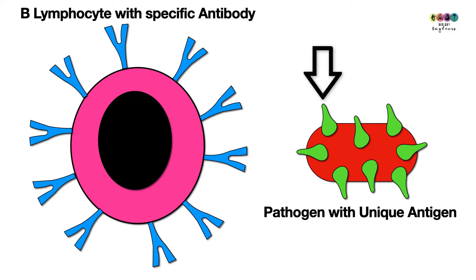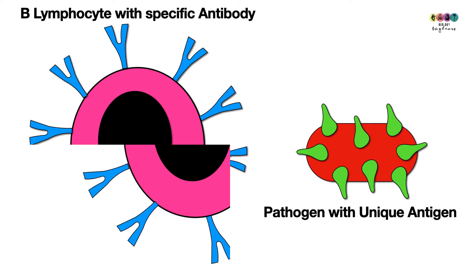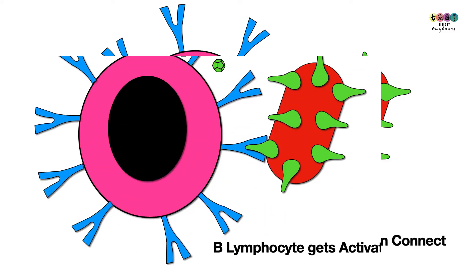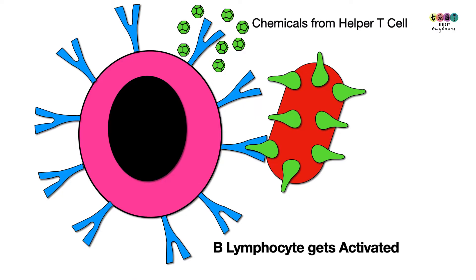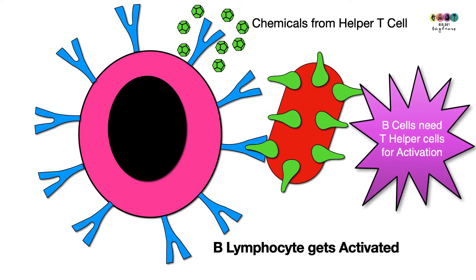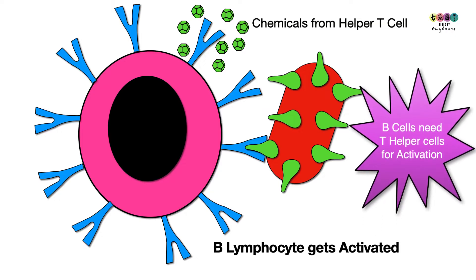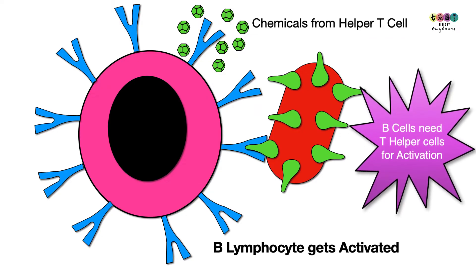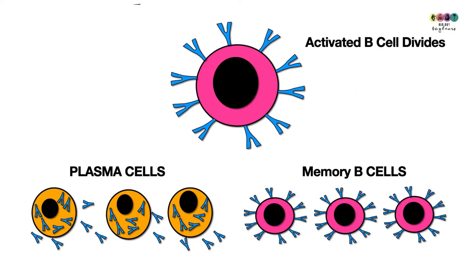Here is a B lymphocyte with a specific shaped antibody on its surface, and here is a pathogen — it could be a bacterium — with uniquely shaped antigens on its surface. If the antibody is complementary to the antigen, they will connect and activate that B cell. Activating B cells is a complex process, and B cells are almost never fully activated unless they get help from T cells — specifically T helper cells and the chemicals they produce.